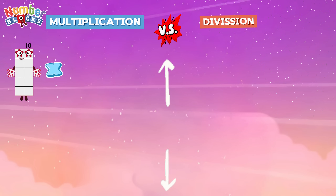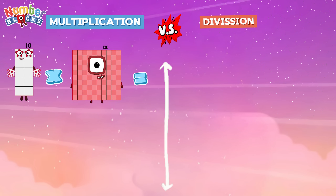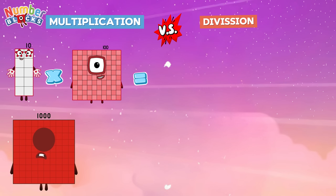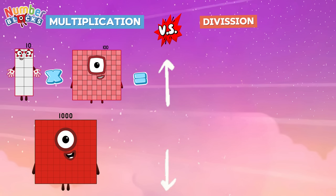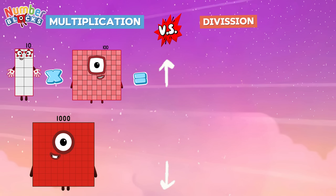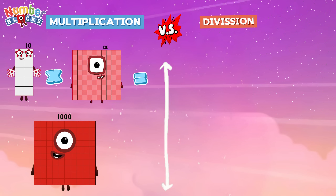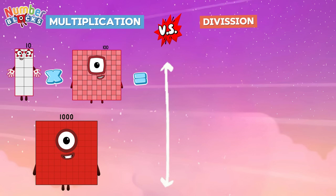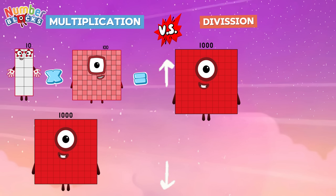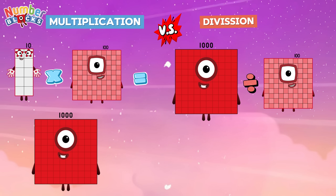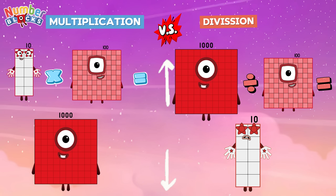Ten multiplied by one hundred is equal to one thousand. Let's compare it with division: one thousand divided by one hundred is equal to ten.